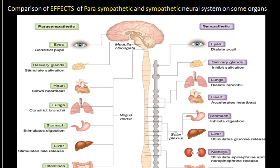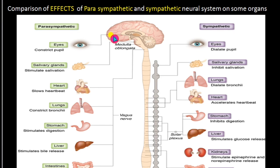In the intestine also, peristalsis will be inhibited and the bladder will be relaxed. All these are the functions which are helpful for a person to fight or flee. After excitation of the body, all these organs will be calmed down and come to the relaxed position by the parasympathetic nervous system.